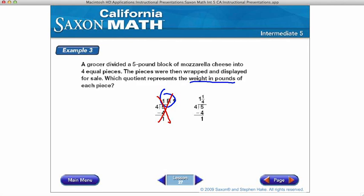However, I can have one and a fourth pounds. This makes sense. I can have a fourth of a pound. I have a fourth of a cup or a fourth of a tablespoon. So, this fraction, or this answer, this quotient, represents the weight in pounds.